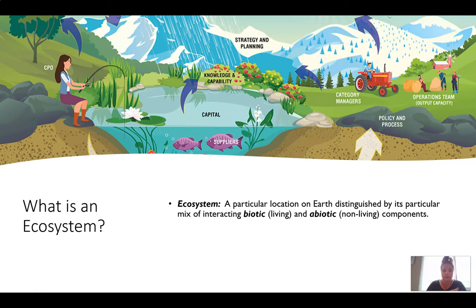So what is an ecosystem? An ecosystem is a particular location on Earth that is distinguished by its particular mix of interacting biotic, which is the living, and abiotic, non-living components. It's the interaction between living and non-living things.